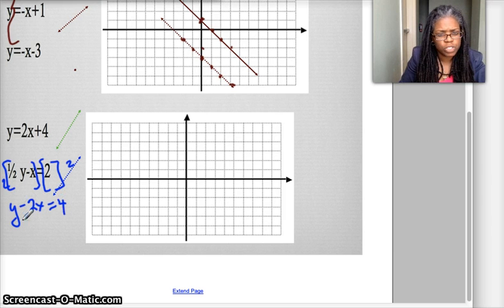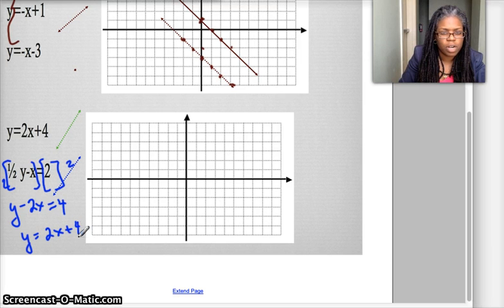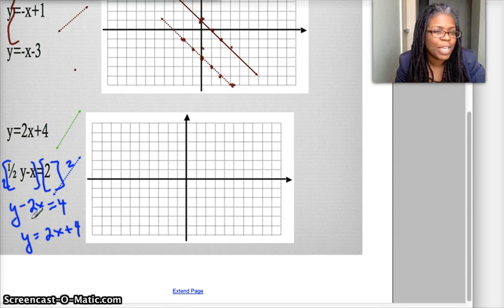And look at what I do. I'm just going to move this over to the other side. So I have y is equal to a positive 2x plus 4. So that's my blue equation. They're the same equation.